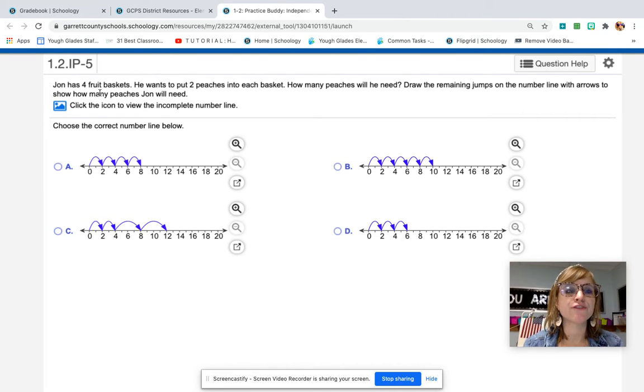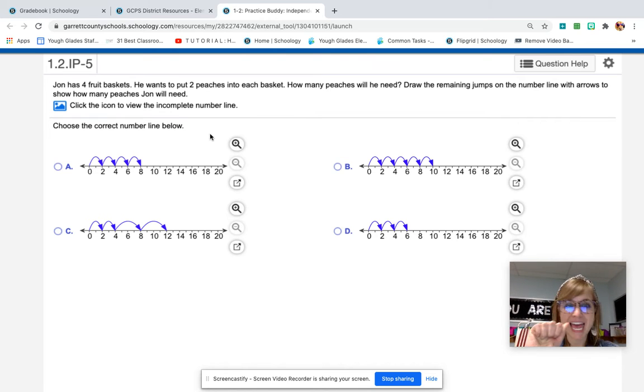John has four fruit baskets. He wants to put two peaches into each basket. How many peaches will he need? Draw the remaining jumps in the number line with arrows to show how many peaches John will need. So we just have to pick between A, B, C, or D.